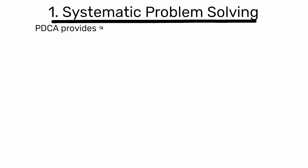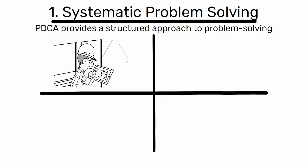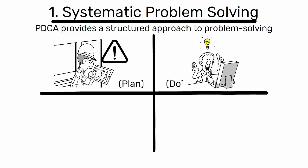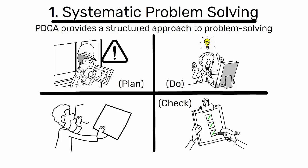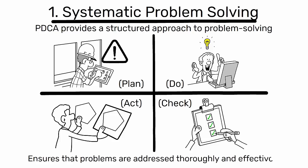1. Systematic Problem Solving. PDCA provides a structured approach to problem-solving. It guides engineers through the process of identifying a problem (plan), implementing a solution (do), evaluating the results (check), and making necessary adjustments (act). This systematic approach ensures that problems are addressed thoroughly and effectively.